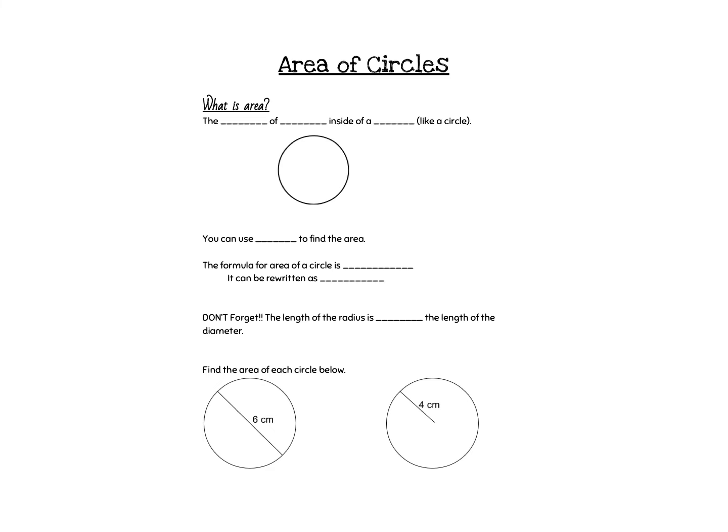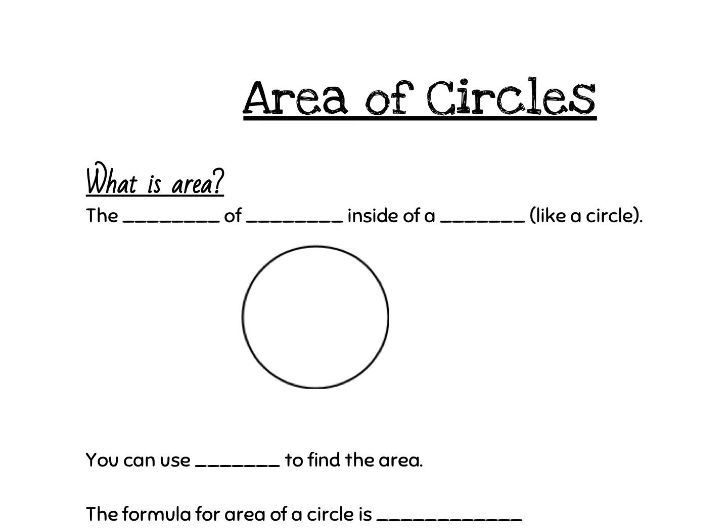So area of a circle is one way that we could determine which one exactly will give us more food. So what exactly is area? You've talked about area in the past probably in sixth grade. You spent a little time in area maybe in elementary school. We haven't done much with area this year. So just a reminder that area is the amount of space inside a shape. In this case we're talking about circles but you really could have any kind of shape.